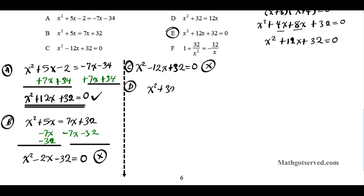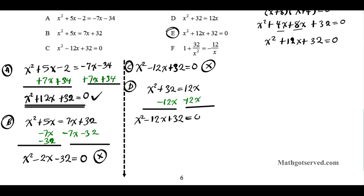Option D gives x squared minus 12x plus 32 equals 0, which does not have roots of negative 8 and negative 4. Option E, which we already confirmed, x squared plus 12x plus 32 equals 0, is a match. Now let's look at option F.